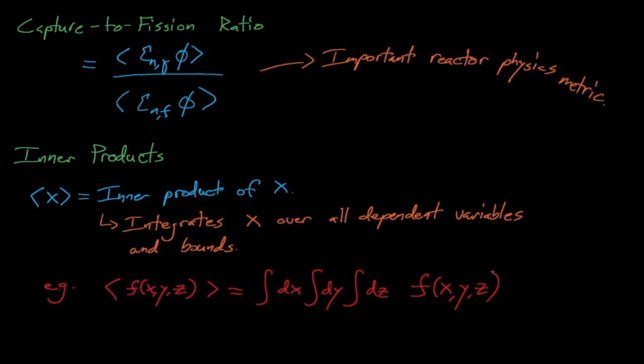When applied to these reaction rates, these inner products give us the overall reaction rate integrated over all energies across the entire reactor. The capture-to-fission ratio is important in reactor design because it describes how effectively nuclei absorb neutrons. A lower capture-to-fission ratio means that neutrons are more likely to cause fission events versus capture events, and thus are more likely to continue the fission chain reaction. However, a low capture-to-fission ratio isn't always necessarily a good thing.